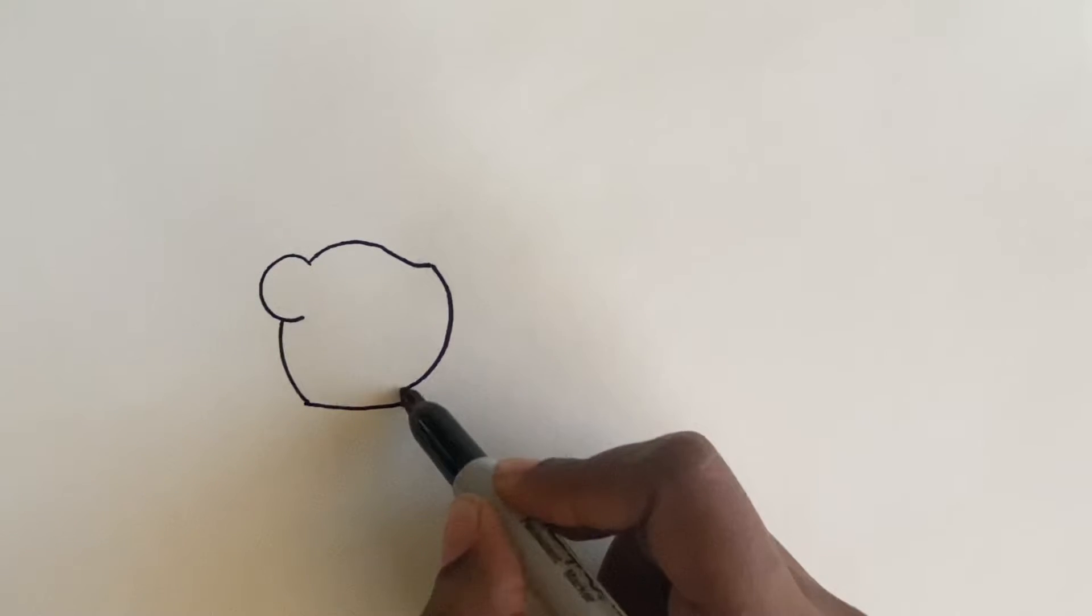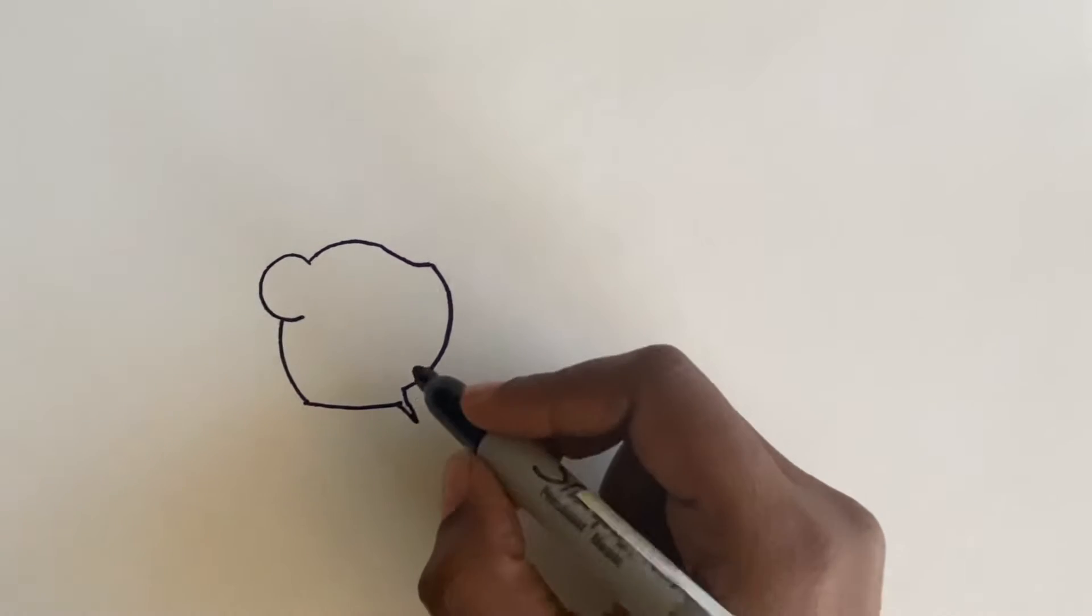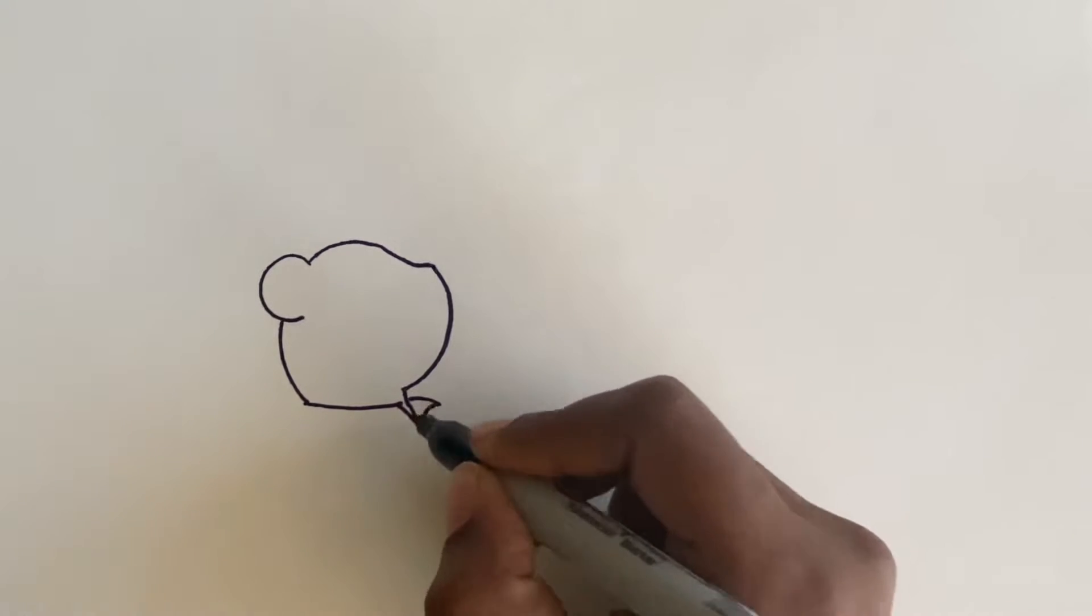Good. Now let's make the collar of the shirt. Just make a V and a flick on the other side. Good.